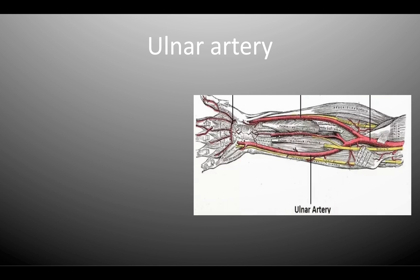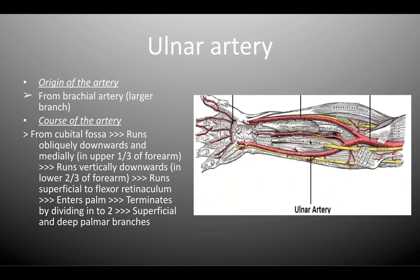Next up, the ulnar artery, which is the larger terminal branch of the brachial artery. It is given off in the cubital fossa and runs downwards obliquely and medially in the upper one third of the forearm, then immediately runs vertically downwards in the lower two thirds of the forearm. It then runs superficial to the flexor retinaculum, enters the palm, and terminates by dividing into the superficial and deep palmar branches.